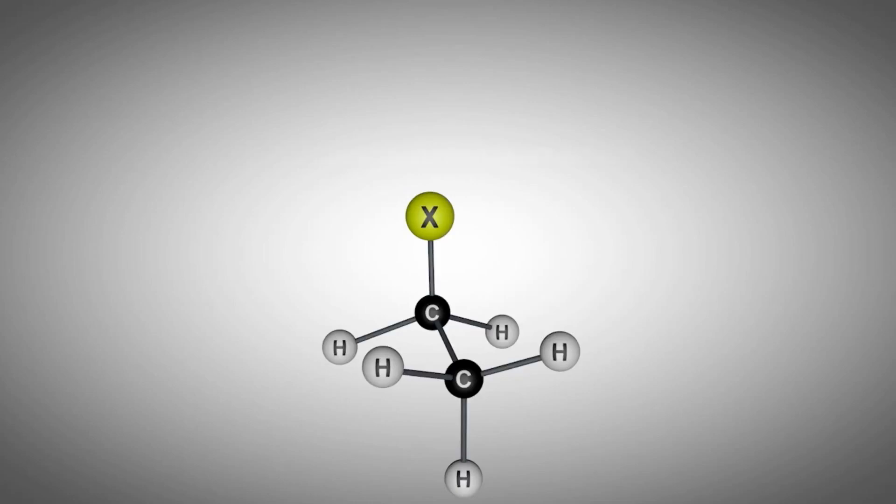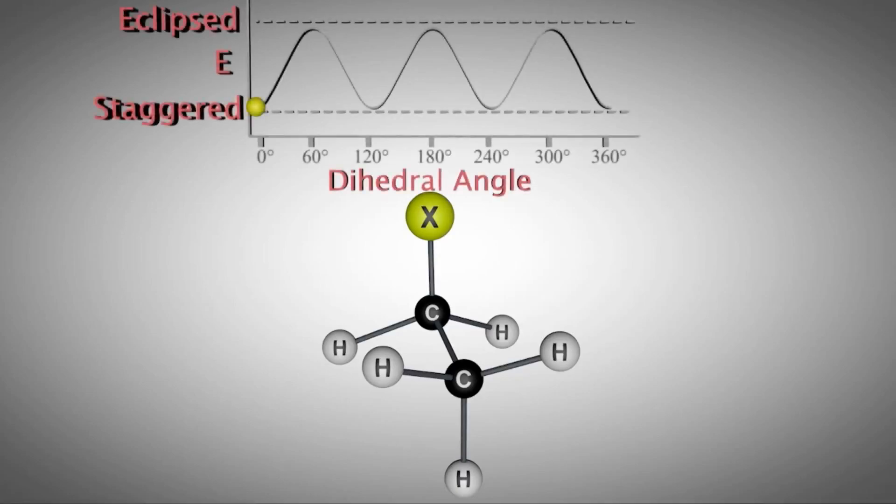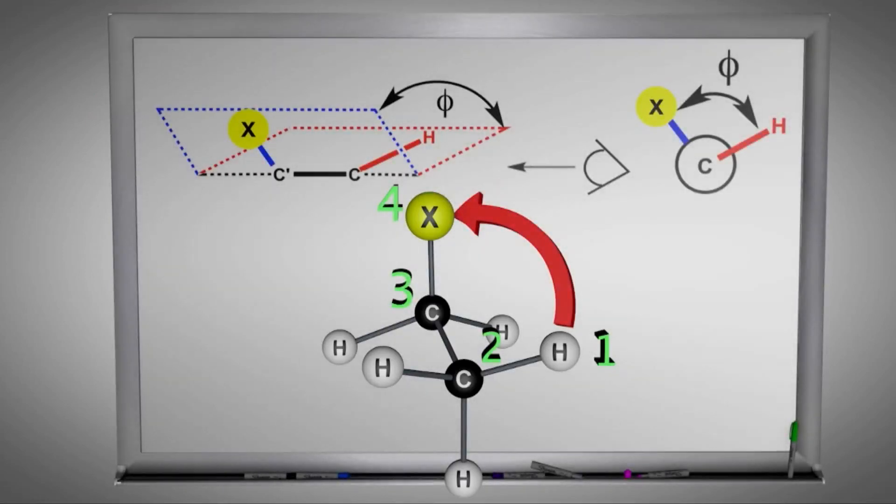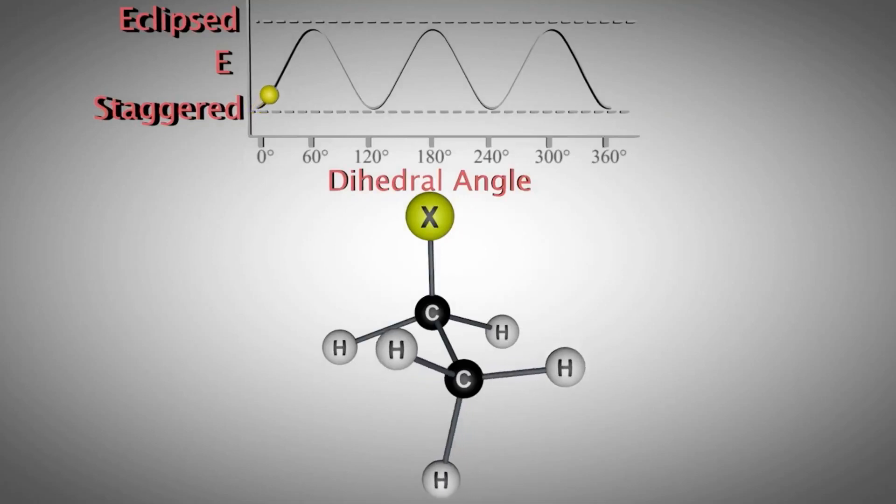When we graph the relative stabilities of these rotamers, the x-axis is designated the dihedral angle, which is simply the angle indicated between four atoms, which is 60 degrees in this example. As the dihedral angle changes, so will the relative stability of the molecule, which is indicated on the y-axis.